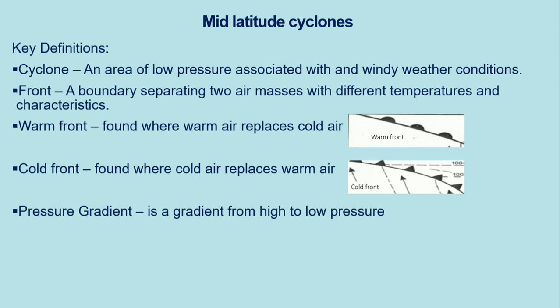So, mid-latitude cyclones — as usual we start with key definitions that you need to know to understand this topic. A cyclone is an area of low pressure which is associated with windy weather conditions. A front is a boundary separating two air masses of different temperatures. We're also going to talk about the warm front and cold front.